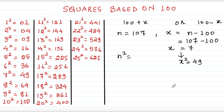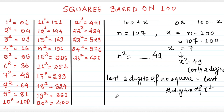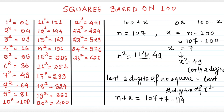The first step in finding out n² — where n is 107 — is to find x², which is 49. One important thing: whenever we find x², we take only the last two digits. So the last two digits of n² equal the last two digits of x², which is 49. For the remaining digits, we compute n plus x: 107 plus 7 equals 114. So n² comes out to be 11449.